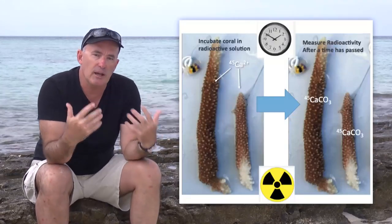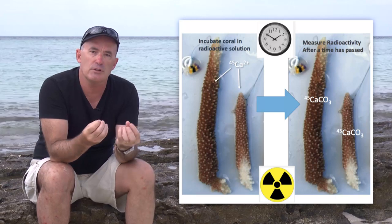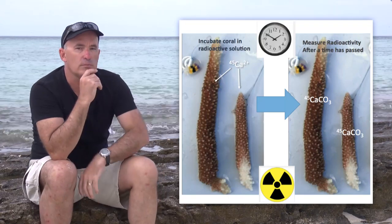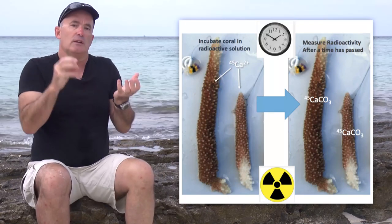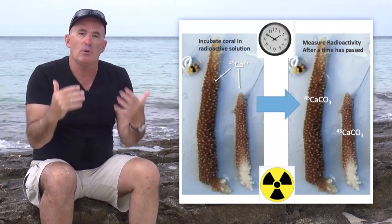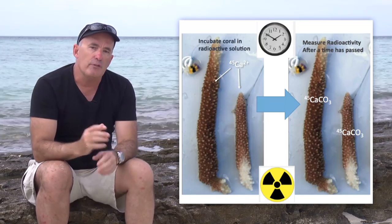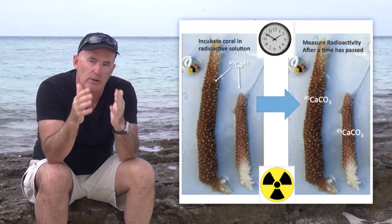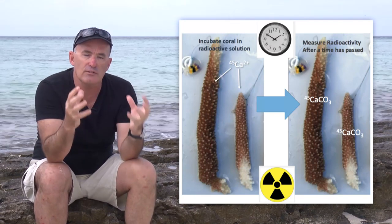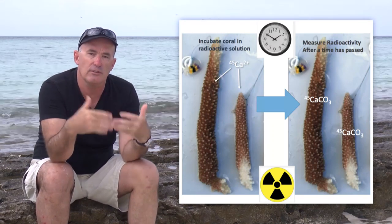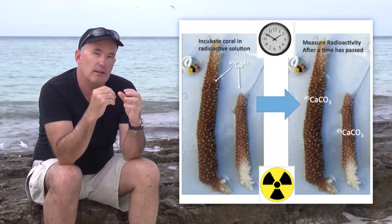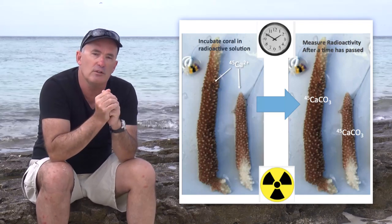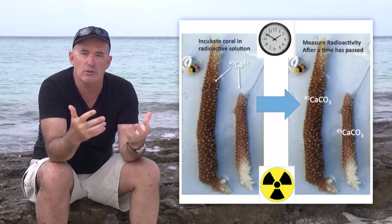Another way to measure calcium carbonate is to measure the rate of incorporation of radioactive molecules, such as calcium-45, into the skeletons of corals and other organisms. To do this, corals are incubated in seawater in which a small amount of radioisotope has been added. Over time, the radioisotope is deposited along with non-radioactive isotopes of calcium and is used as a measure of the rate at which calcium carbonate is being formed. This technique is very precise, but it cannot be done in the field — it always has to be done under controlled laboratory conditions.